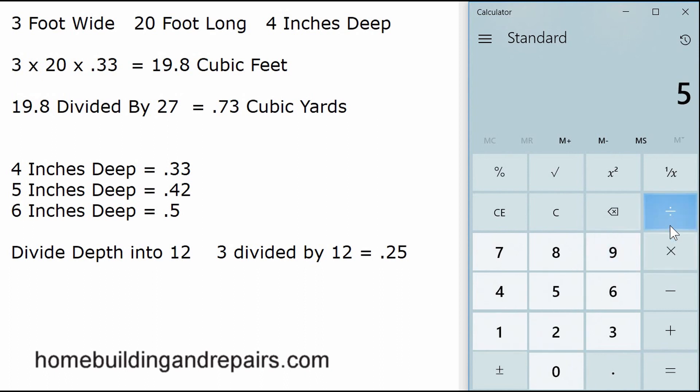Let me show you what I'm talking about. For five inches: five divided by 12 equals 0.416. If you round that off, it would be 0.42. Let's take three times 20 times 0.33. This is feet, remember: three times 20 times 0.33 equals 19.8 cubic feet.